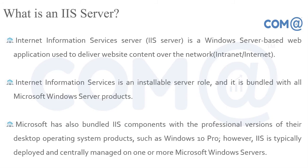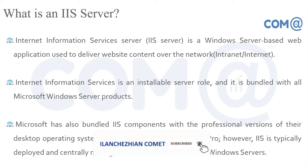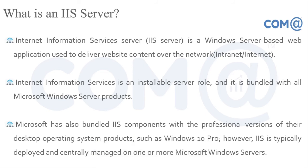To configure a web server, install IIS — Internet Information Services — on Windows. IIS is used for Windows-based web applications and to deliver website content over the network. On Windows Server, install the IIS service, create websites, and publish them. IIS is also available on Windows 10 Professional Edition, where you can install and configure IIS as a role.